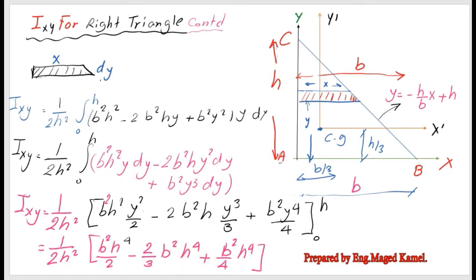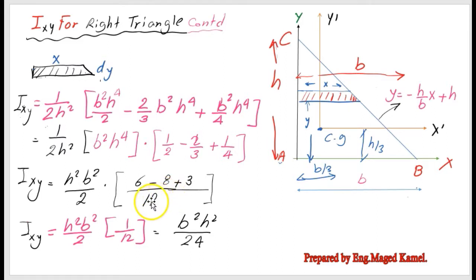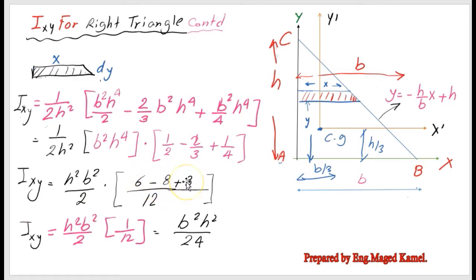We identify the common factor b²h⁴ and take the constant 1/(2h²) outside. Inside the bracket we have 1/2 - 2/3 + 1/4. Taking 12 as the common denominator: 6/12 - 8/12 + 3/12 = 1/12. Therefore Ixy equals (1/12)·(b²h²/2) = b²h²/24.